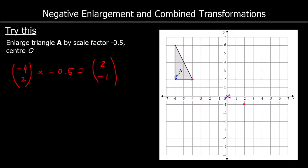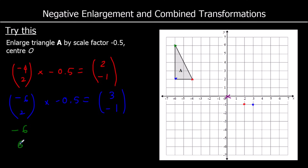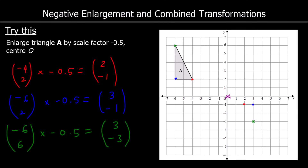I'll pick another corner: back 6, up 2 — so the vector (-6, 2). Multiply it by minus 1.5, which becomes (9, negative 3) — wait, that's positive 9 in x... so right 9... Actually: (-6)×(-1.5)=9 and 2×(-1.5)=-3. So right 9, down 3. And the other corner is back 6, up 6 at the moment; multiply by minus 1.5 gives (9, -9) — so right 9, down 9.